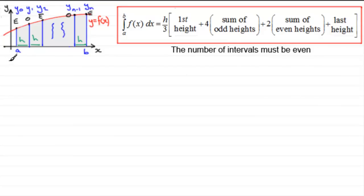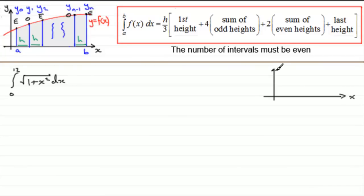Now, Simpson's rule, as I say, I'm not giving it with any proof, was this. That the integral of f of x from x equals a to x equals b integrated with respect to x is equal to the width of our interval divided by 3. And then you work out the first height, plus four times the sum of the odd heights, plus twice the sum of the even heights, plus the last height. And we can only do this if the number of intervals is even.